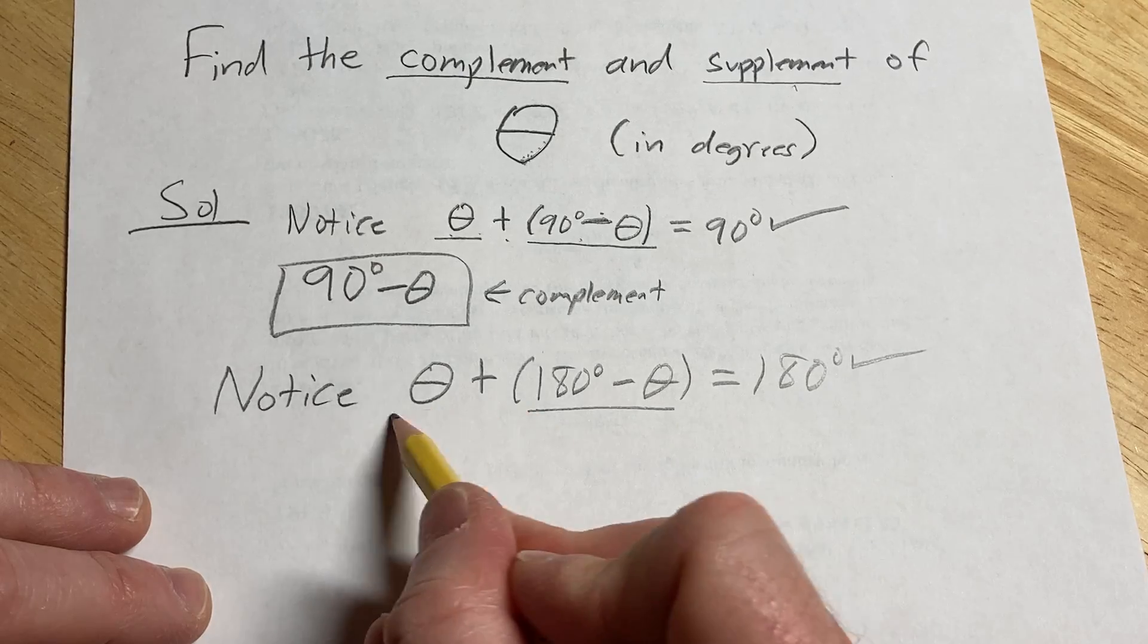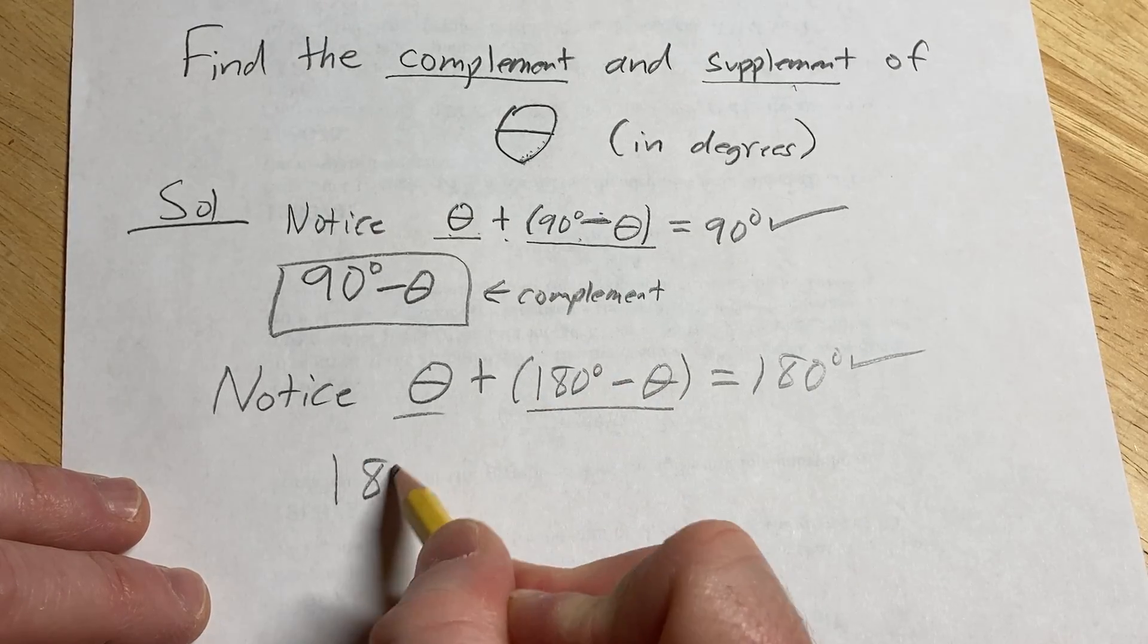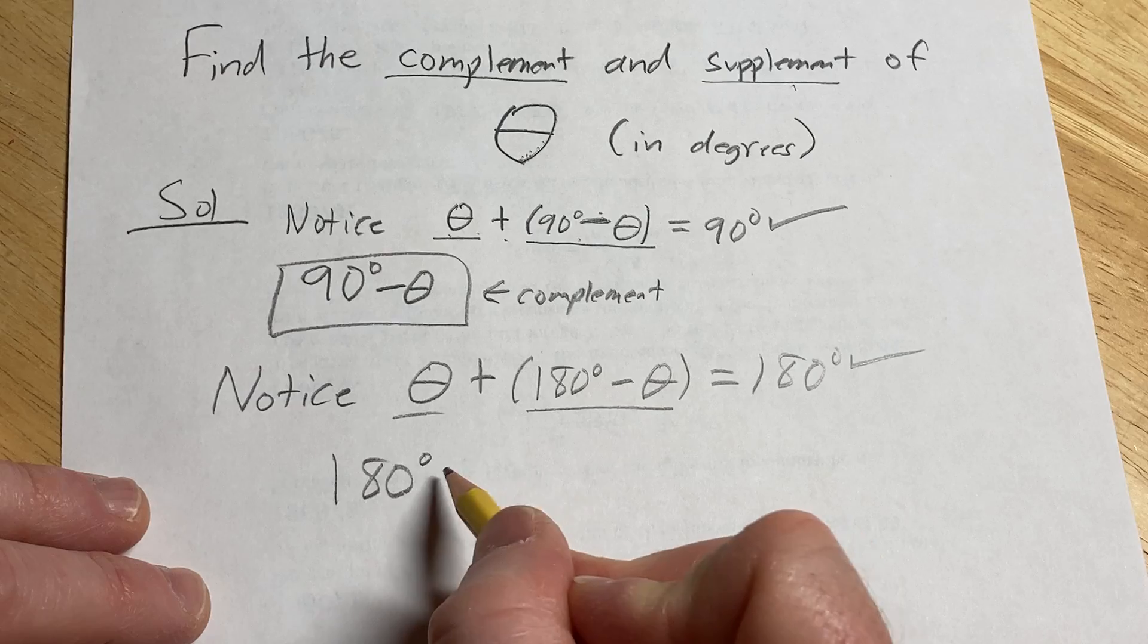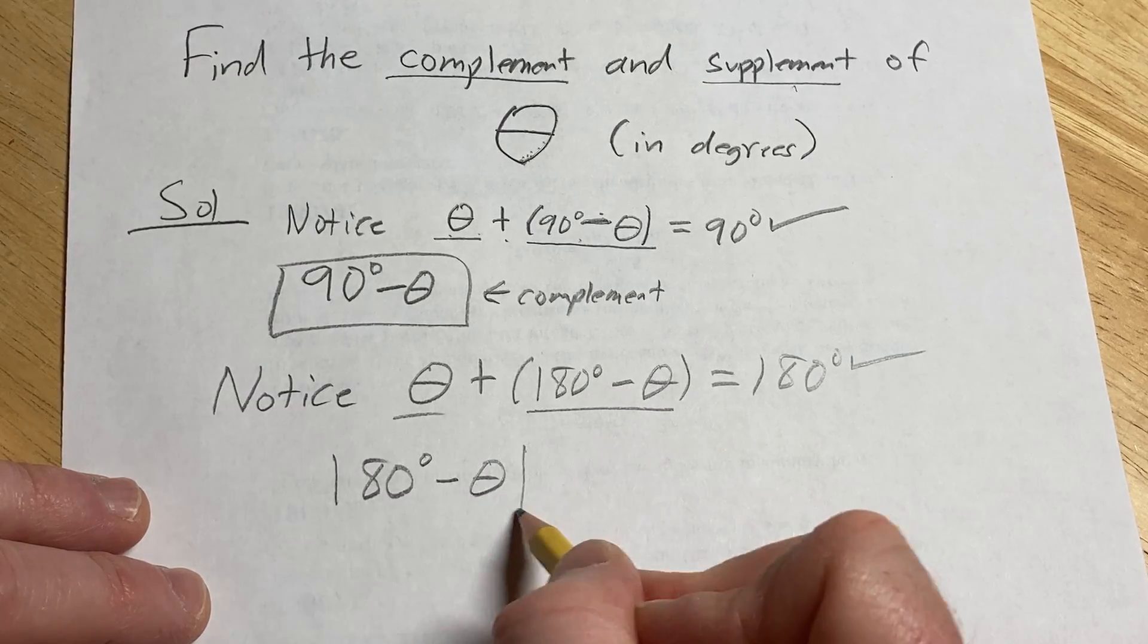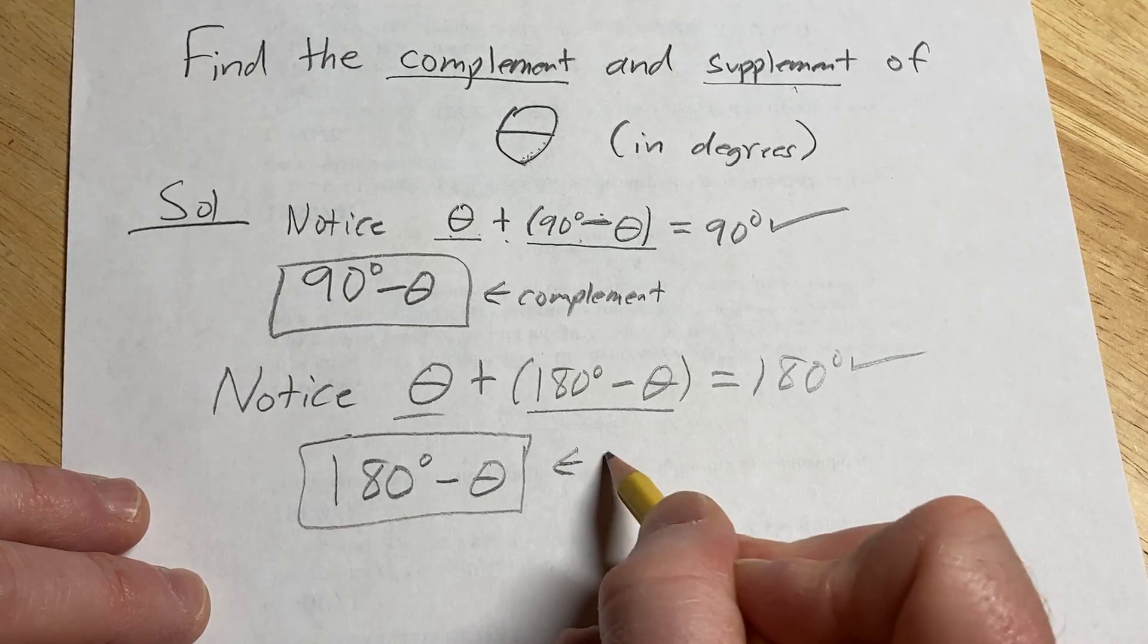So these are supplementary angles. The supplement of theta is going to be 180 degrees minus theta, and this is the supplement.